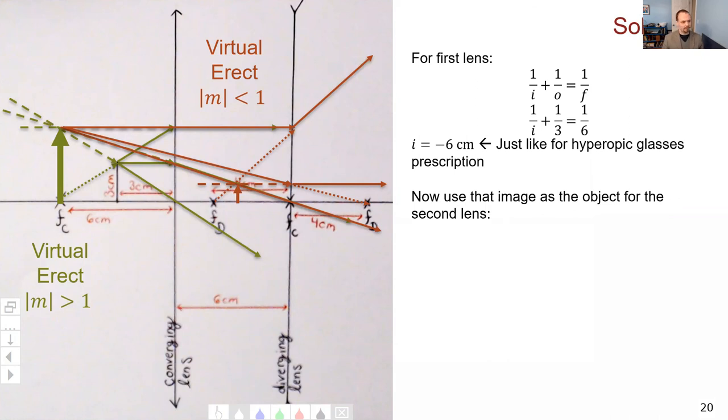We go ahead and use that as our object for the second lens. How far is this object from this lens? It is six plus six, which means it is 12. It's a positive 12 because the image is on the incoming side of this diverging lens. Now we can apply one over I, one over O, one over F again. In this case, the focal length is four, but it must be negative because this is a diverging lens. Solve it out and you get minus three centimeters. That tells us that our image is three centimeters to the left of the diverging lens.